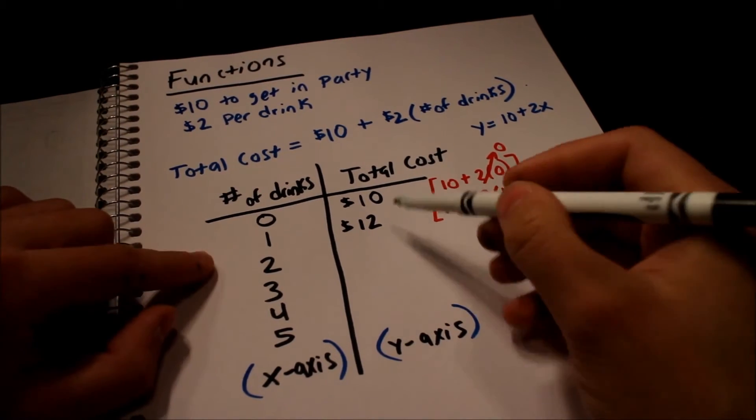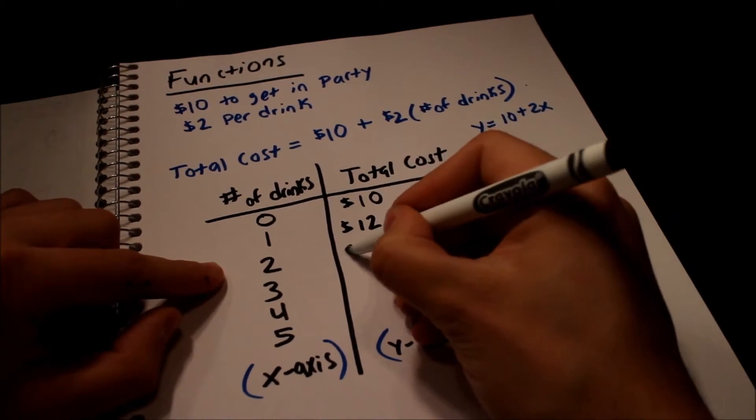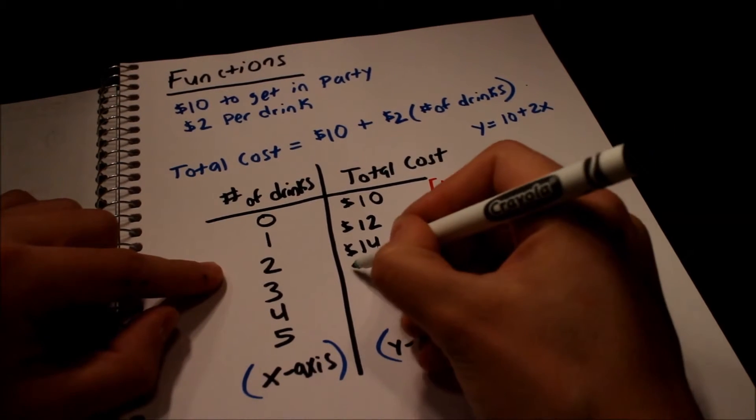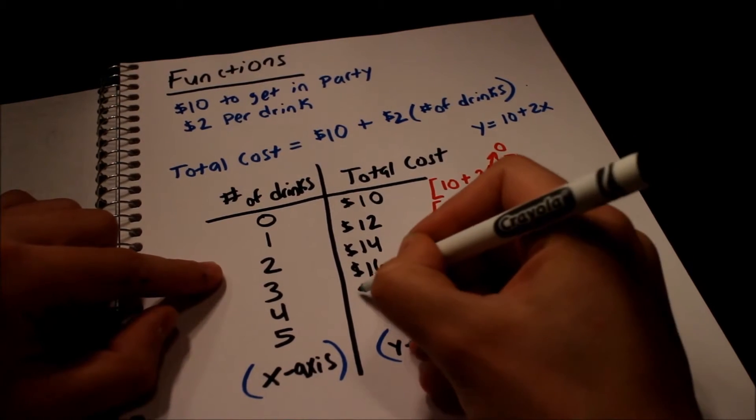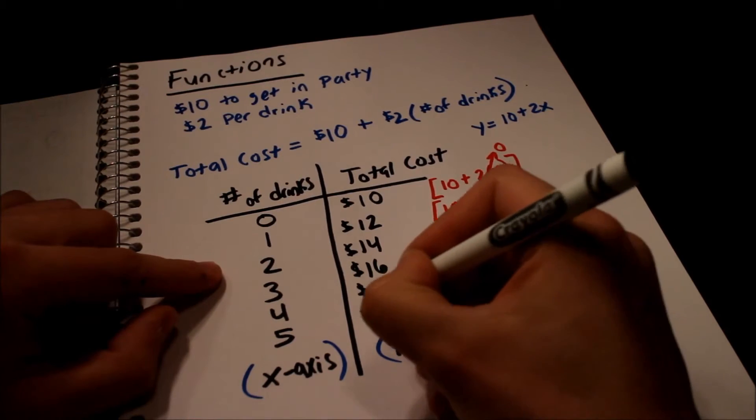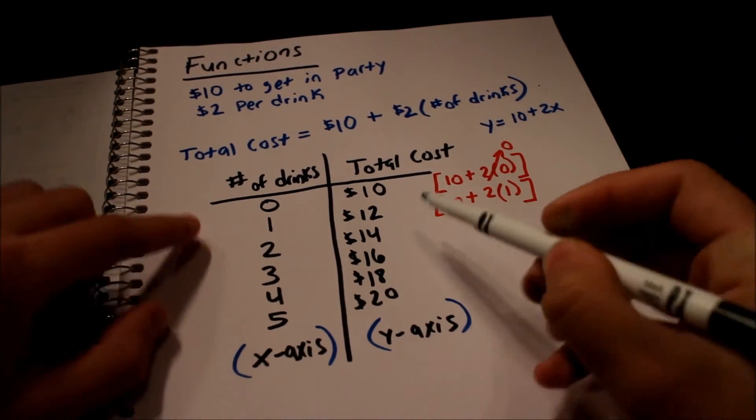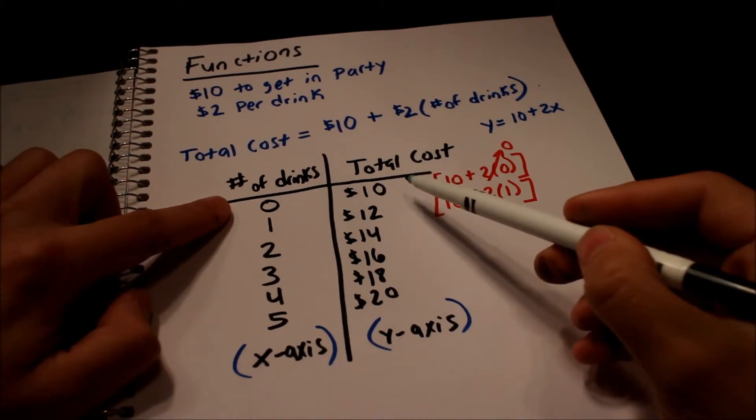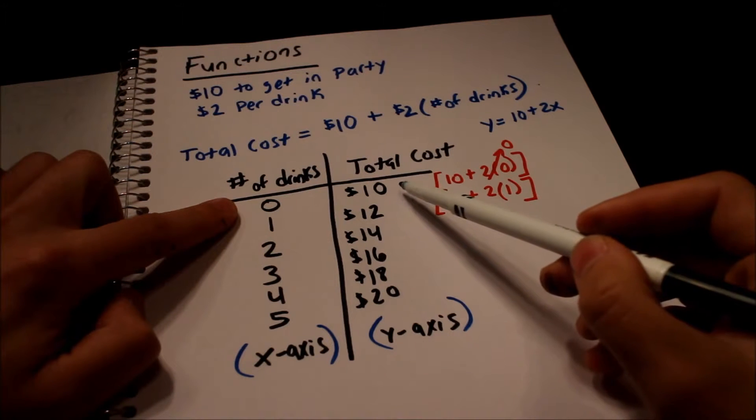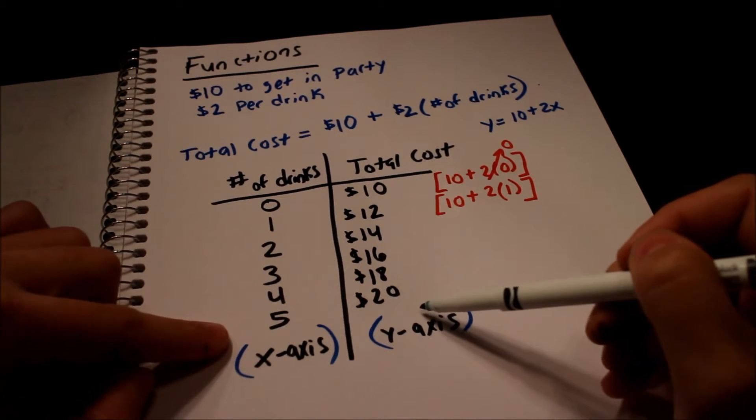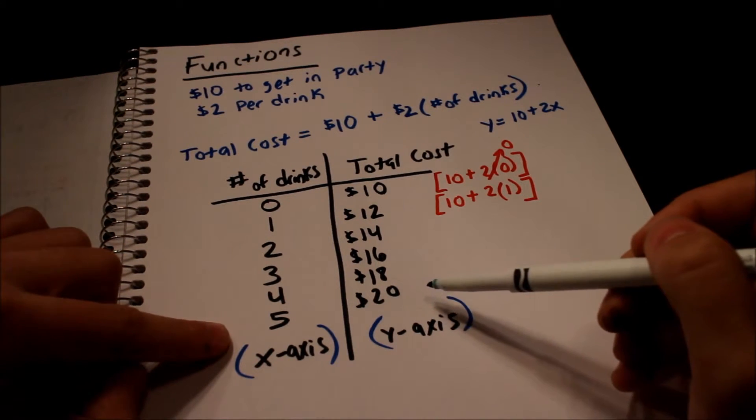If we do this for each point, we'll have ten, twelve, fourteen, sixteen, eighteen, twenty. So if you don't spend anything, if you don't have any drinks, you're going to spend ten bucks, which is just the cover charge to get in. If you have five drinks, you will have spent twenty dollars.